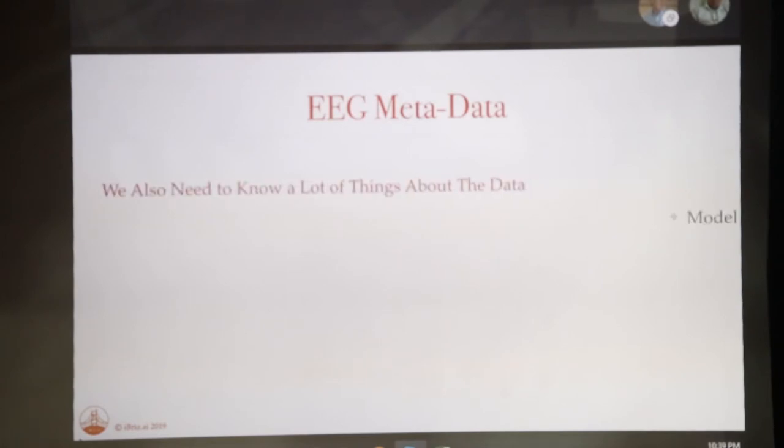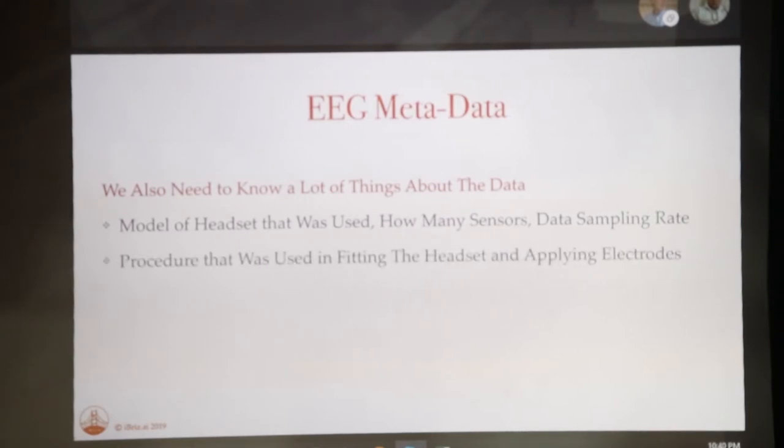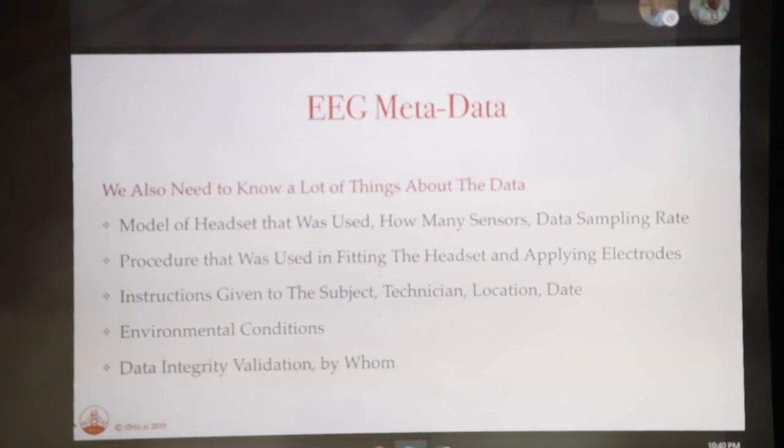EEG metadata include things like model of headset that was used, how many sensors, data sampling rate, how well the technician applied the headset, how prepared the subject, instructions that were given, where the data were taken, environmental conditions might include things like, if you're doing sound therapy, what exactly were the sounds that the subject was subjected to. You want to do correlations between these, you need to record a lot of external data about the environment.